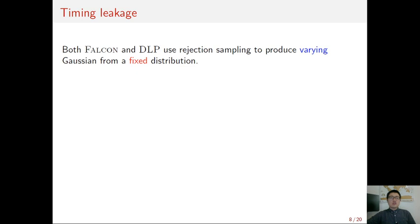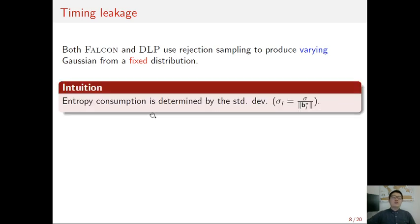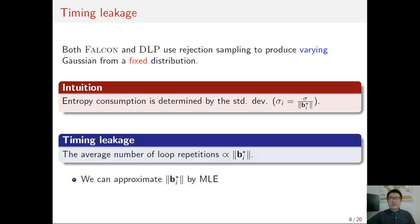So, to deal with different integer Gaussian parameters, both FALCON and DLP use rejection sampling. That is a generic technique to produce varying Gaussian from a fixed distribution. Rejection sampling could lead to some entropy loss. And intuitively, the loss is mainly determined by the standard deviation of the target Gaussian. And in the implementations of FALCON and DLP, we show that the average number of loop repetitions is proportional to the corresponding Gram-Schmidt norm of the sampling basis.